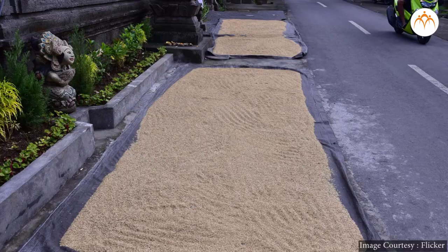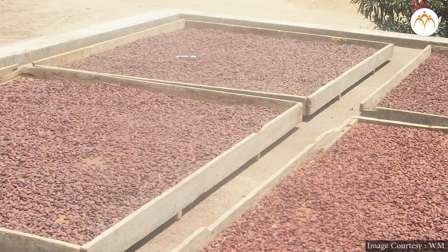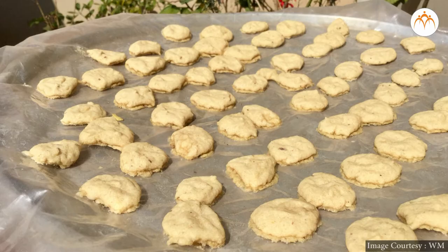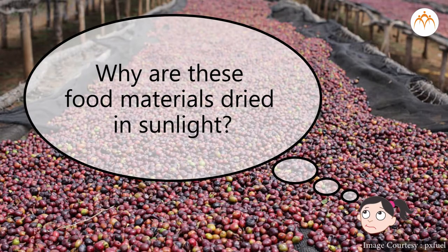Students, tell me, have you seen in your houses that usually in summer, food grains like wheat are dried in sun? Even some other delicious food items like papad, homemade chips are dried in sun. Why are these food materials dried in sunlight? What is your guess? I will answer this.